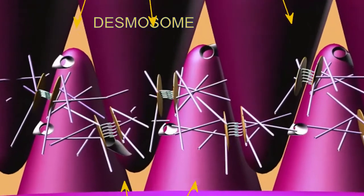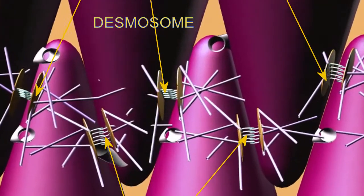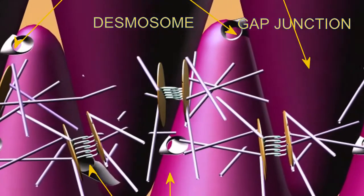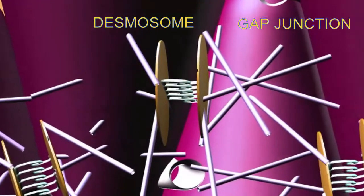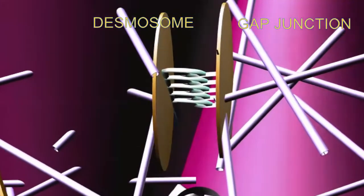There are desmosomes for strength, and gap junctions, which allow ions to pass from cell to cell and allow action potentials to travel between cells.